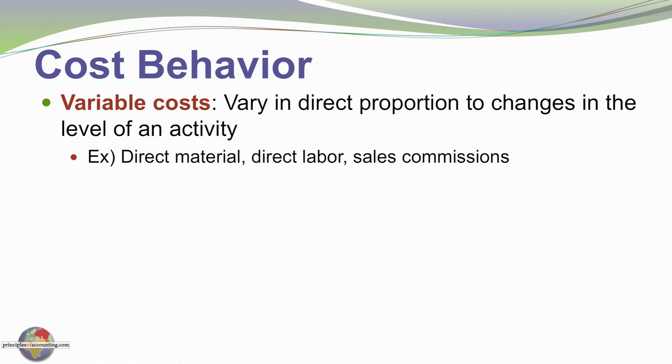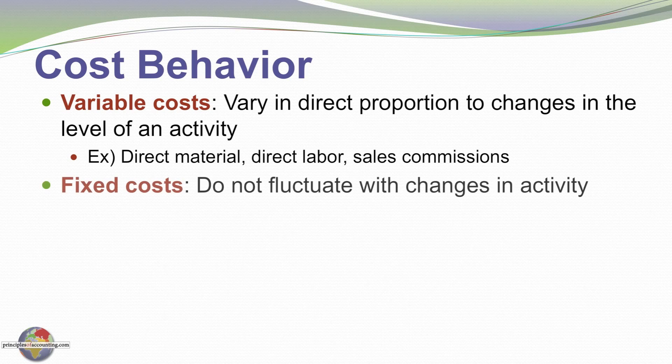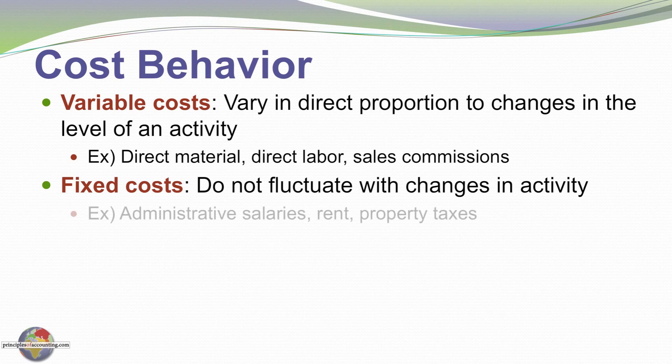Each additional unit of production produces another uniform increment in cost. Fixed costs are those that do not fluctuate with changes in levels of activity. Examples include management salaries, rent for a facility, and property tax amounts. No matter the level of volume for the business, those costs are stable.